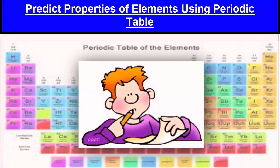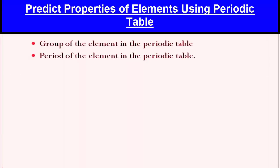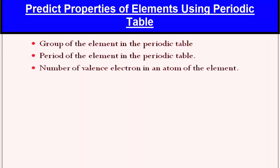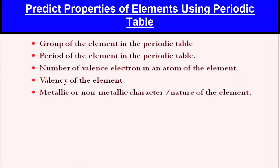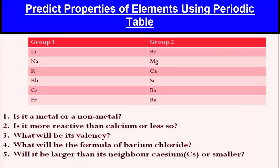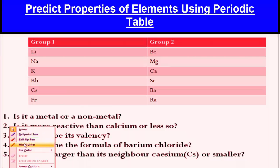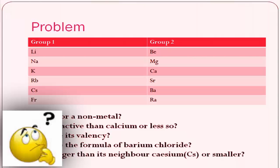The electronic configuration of any element tells us many things: the group of the element in the periodic table, the period of the element, the number of valence electrons, the valency, the metallic or non-metallic character of the element, and the size of the atom. Now let's discuss this with the help of an example.